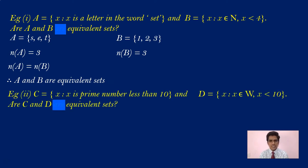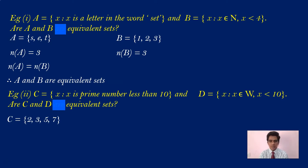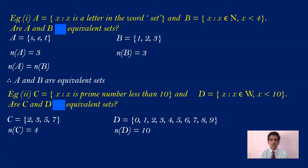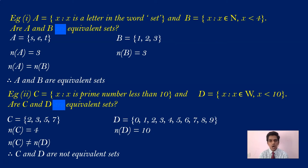Let us look at one more example. C = {x | x is a prime number less than 10} and D = {x | x ∈ W, x < 10}. For C, the prime numbers less than 10 are 2, 3, 5, 7. For D, the whole numbers less than 10 are 0, 1, 2, 3, 4, 5, 6, 7, 8, 9. How many elements in C? 4, so n(C) = 4. How many elements in D? 10, so n(D) = 10. Now n(C) and n(D) are not equal, therefore C and D are not equivalent sets.